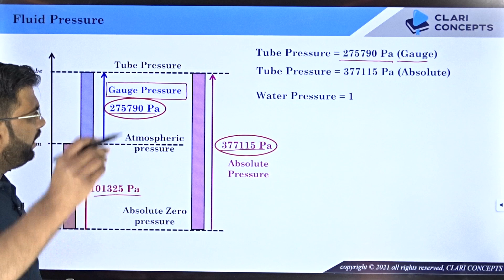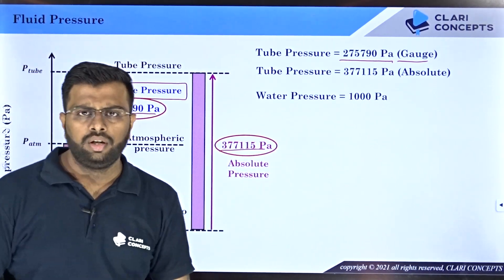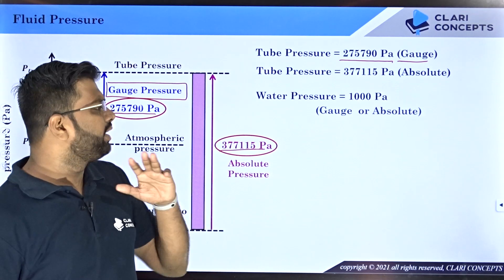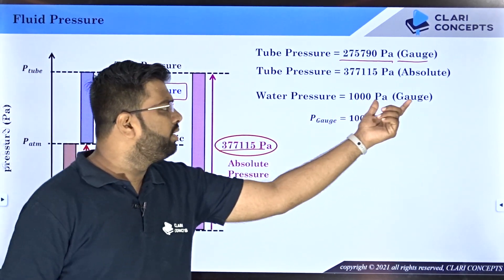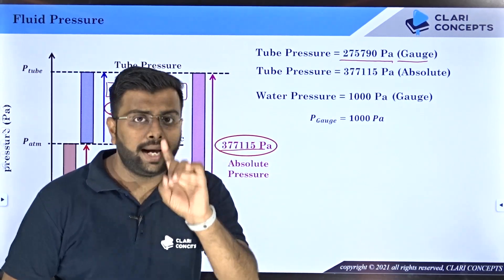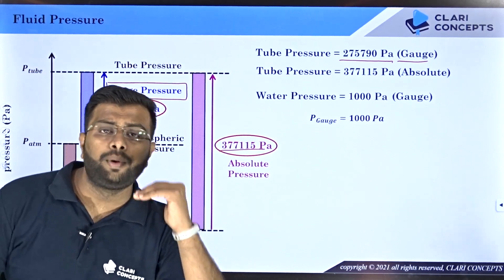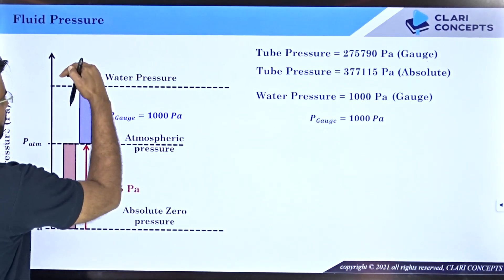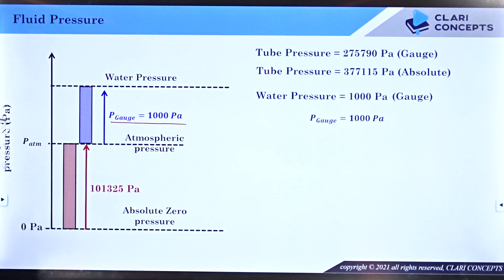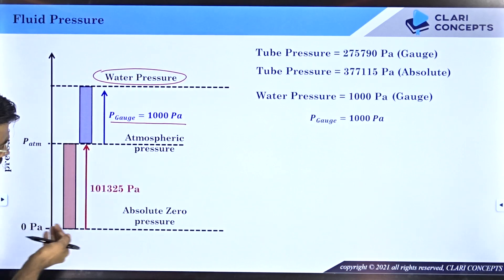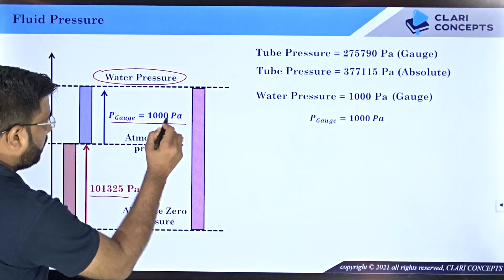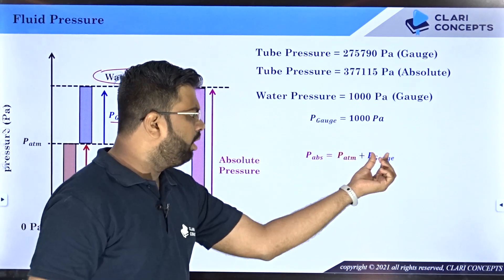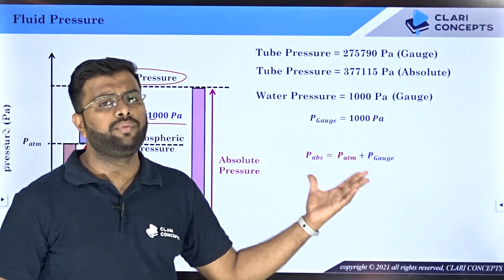If somebody tells you that water pressure inside a pipe is 1000 Pascal, your first question should be: is this 1000 Pascal gauge or absolute? If they say it is gauge, then you can understand that the pressure within the water pipe is 1000 Pascal above atmospheric. So the formula is: absolute pressure equals atmospheric pressure plus gauge pressure. And if you have absolute pressure and want to calculate gauge pressure, you subtract atmospheric pressure: P_gauge = P_absolute minus P_atmospheric.